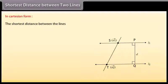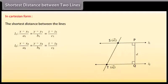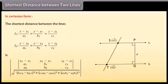In Cartesian form, the shortest distance between lines L1: (X minus X1) by A1 equals (Y minus Y1) by B1 equals (Z minus Z1) by C1 and L2: (X minus X2) by A2 equals (Y minus Y2) by B2 equals (Z minus Z2) by C2 is the modulus of the determinant with rows (X2 minus X1, Y2 minus Y1, Z2 minus Z1), (A1, B1, C1), (A2, B2, C2) divided by square root of (B1C2 minus B2C1) squared plus (C1A2 minus C2A1) squared plus (A1B2 minus A2B1) squared.